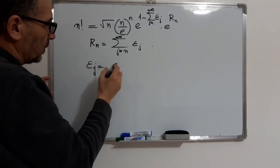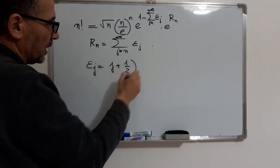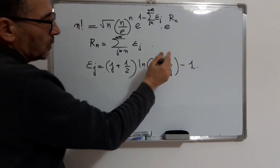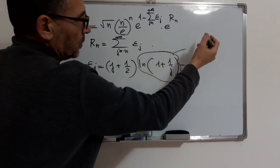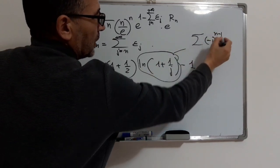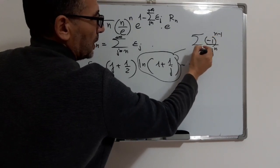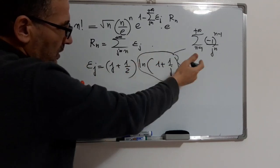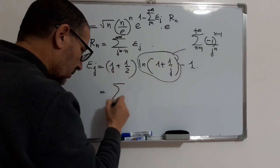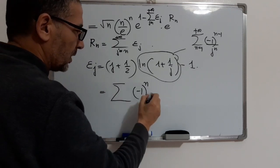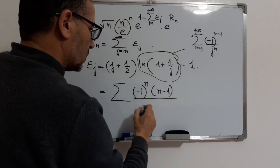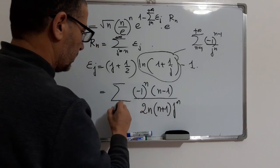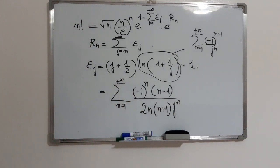We define gamma_g as (g + 1/2) times log(1 + 1/g) minus 1. We know the Taylor expansion of this expression, which equals minus the sum from n=1 to infinity of 1 over (g^n). Applying this expansion and factoring out the constant, we obtain that it equals minus the sum of 1 over ((2n+1)·g^n) to infinity.